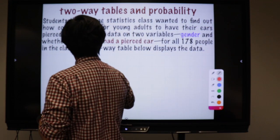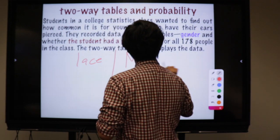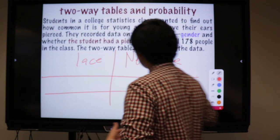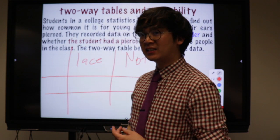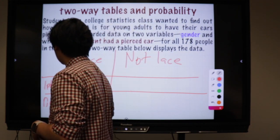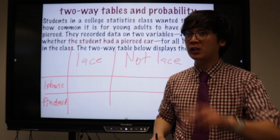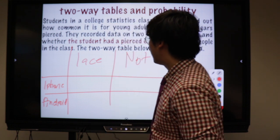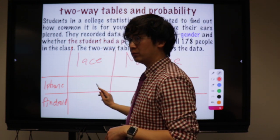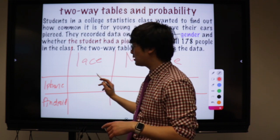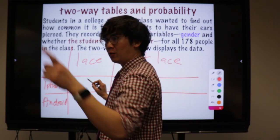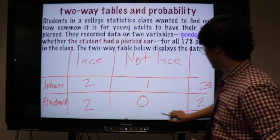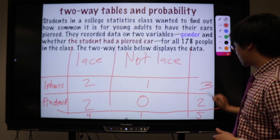There are only six of you. We'll use two variables: type of cell phone (iPhone or Android) and type of shoes (lace or no lace). This is a two-way table. Let's start with lace and iPhone — who is wearing shoes with laces and has an iPhone? The totals check out: four plus one equals five, three plus two equals five.